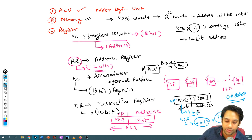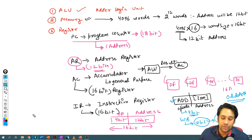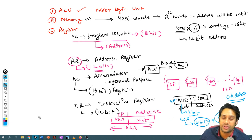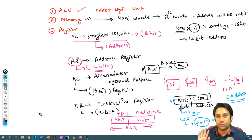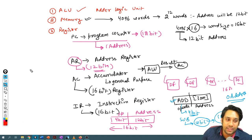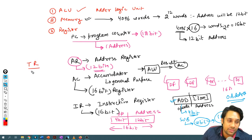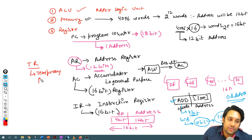The MAR — Memory Address Register — will be discussed further. The address register and memory address register are the same thing; MAR and AR both represent the same register. We also have something called TR, the Temporary Register.